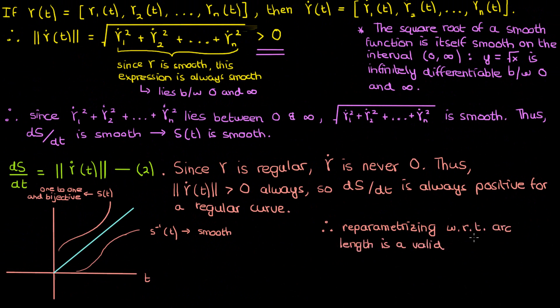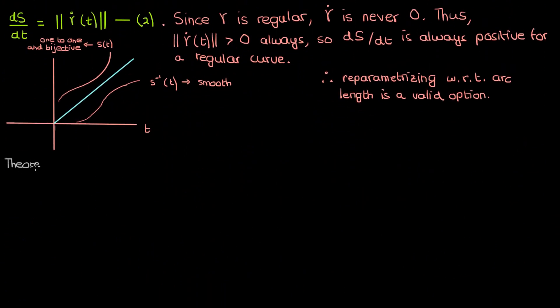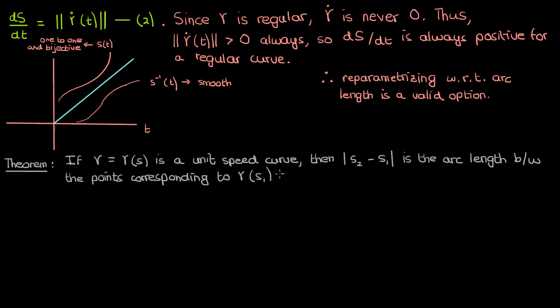So I've shown that we're safely allowed to reparametrize with respect to arc length, but why is this important at all? The answer lies in this theorem, which states that if γ(s) is a unit speed curve, then the magnitude of the difference between the unit speed parameter values s₁ and s₂ is just the arc length. The proof of this theorem is quite trivial. Yeah, that sounds like something a lazy math professor or math textbook would say, but it's actually quite easy to prove.